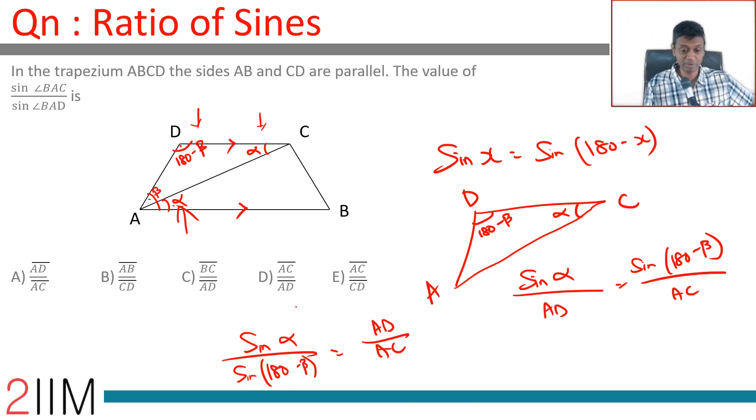Angle BAC is alpha, BAD is beta—we've already made that assumption. We're looking for an answer that is AD by AC.